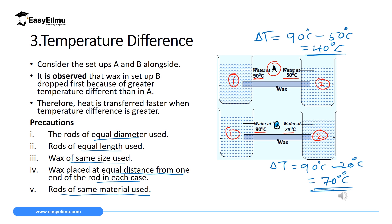What you observe is that in setup B, where the temperature difference is 70°C, the wax falls off faster than in setup A where the temperature difference is 40°C. The reason is that with a greater temperature difference, heat moves very fast through the conductor. In setup A, with a smaller temperature difference, heat moves slowly. So heat transfer is faster when the temperature difference is greater.